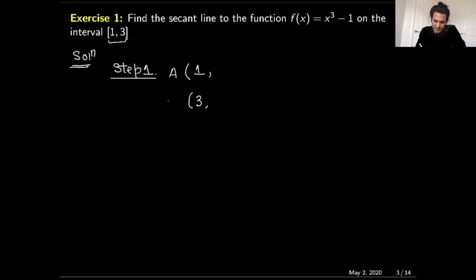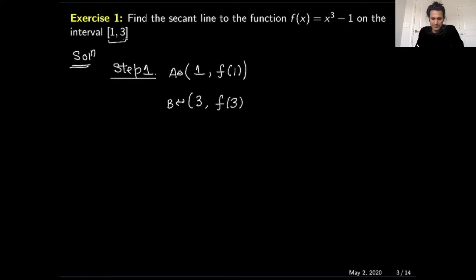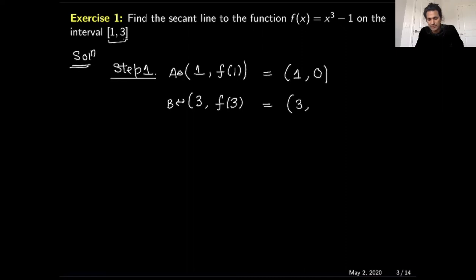Let's call the first point A and the second point B. The x-value of point A is one, and to calculate the y-value we plug x=1 into the function, giving us zero. So point A is (1, 0). For point B, we plug x=3 into the function, giving us 27 minus 1, which is 26. So point B is (3, 26).